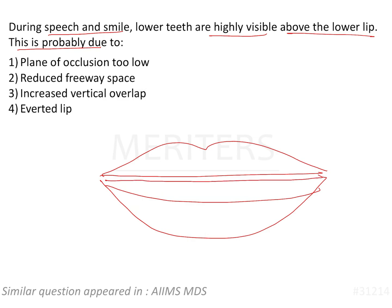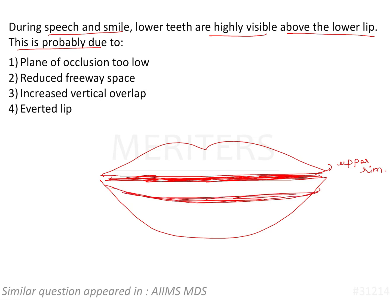The upper rim is visible nearly two millimeters greater than the lip length. This is your upper rim visibility at rest. The lower rim just has to be at the corner of the mouth, at the height of the lower lip. At rest, there is some amount of freeway space that is required.